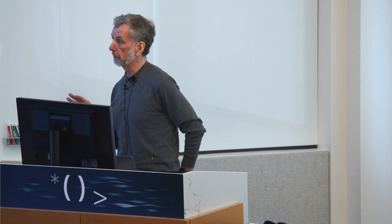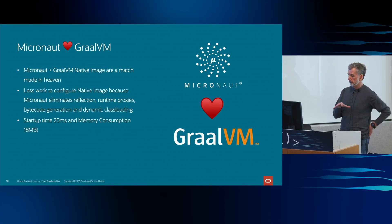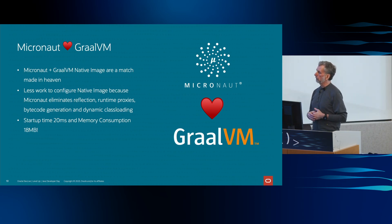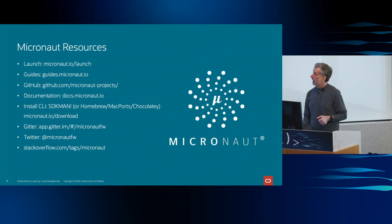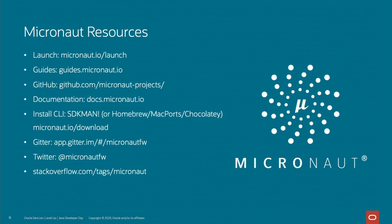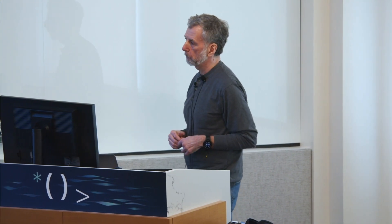Micronaut and GraalVM work really well together because of the design constraints they put on Micronaut — the whole plan of Micronaut fits really well with GraalVM Native Image. Here are some resources: Micronaut Launch, a whole bunch of guides, everything's open source on GitHub, a huge documentation page. You can use the web launcher to build apps, or install the command-line MN executable — which itself is a native executable created by Native Image — and use that with `mn create-app`, specifying your features, language, and build tool. There's also Stack Overflow, Twitter, and Gitter rooms.